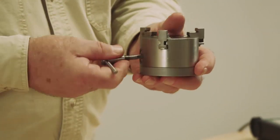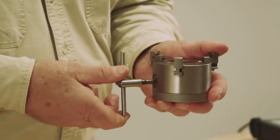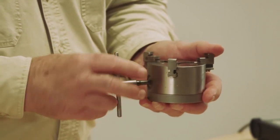These jaws are numbered, one, two, and three. So, what we're going to do is we're going to back these out until all of these jaws will come out of the chuck.